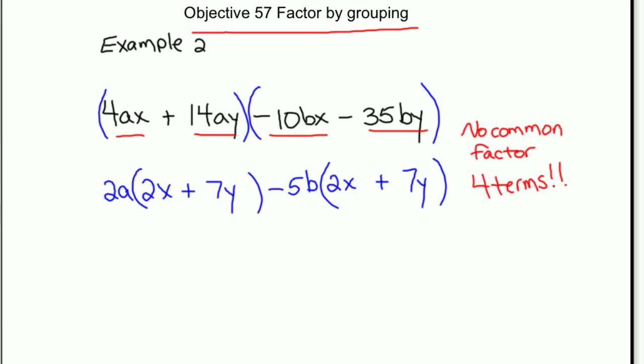And I'm in really good shape here because both of my parentheses have the same terms. So that's going to allow me to factor this part out as my common factor, 2x plus 7y. And then I write in parentheses the stuff I have left, the 2a and the negative 5b. So 2a minus 5b.